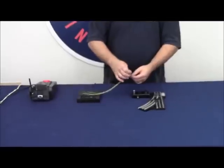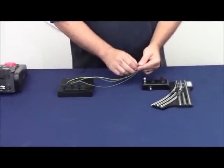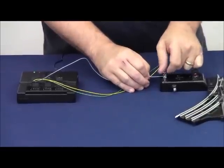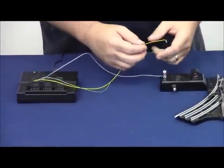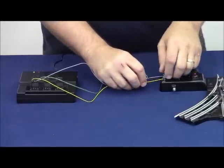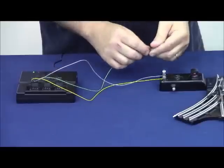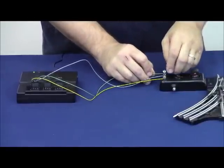I'm going to take my gray wire and go to the center terminal on my switch machine. We're going to guess - I'm going to put yellow, which is my straight route, to number three, and green, which is my diverging route, to number one.